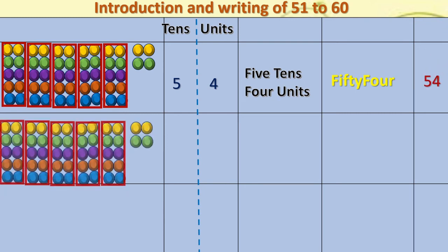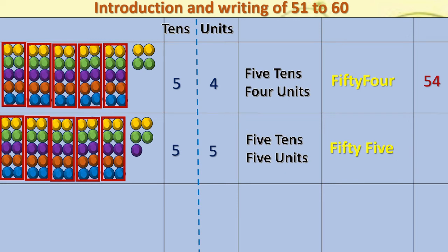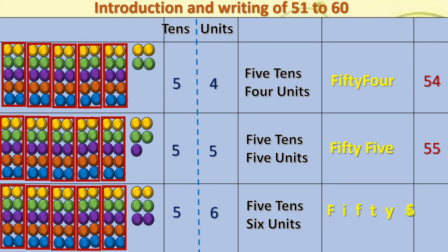We will add one more to fifty-four. Here, five tens and five units. Five tens five units means fifty-five. The number in numeral is fifty and five. We will add one more bead to fifty-five — a violet color bead added. So, five tens, six units — that makes fifty-six, that is fifty and six.